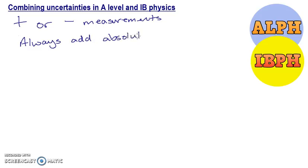The first rule is in the situation where you're adding or subtracting measurements. The simple rule is this: always add absolute uncertainties. So if you're adding or you're taking away, always add absolute uncertainties.